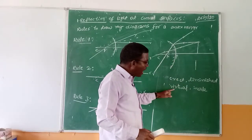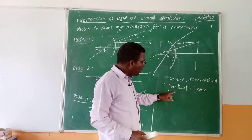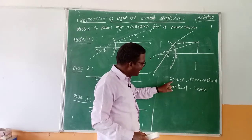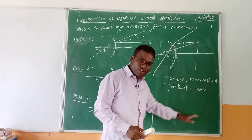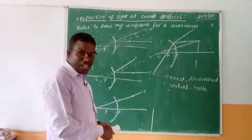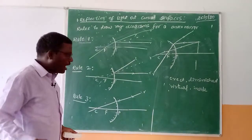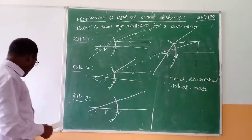That means here there is no deviation in the light path. So using these rules we can draw the ray diagram for the convex mirror.